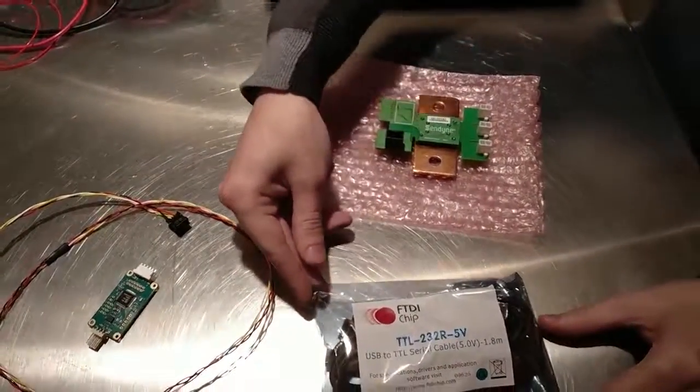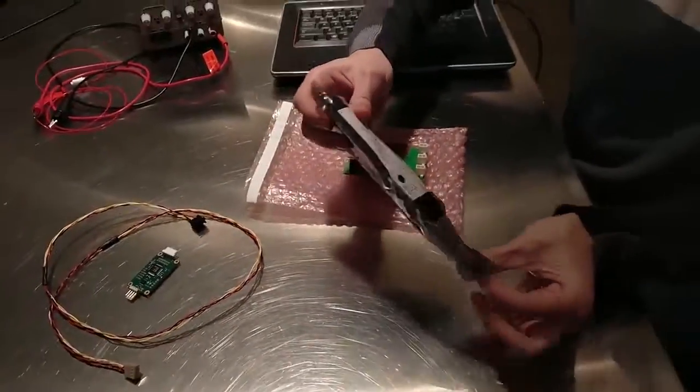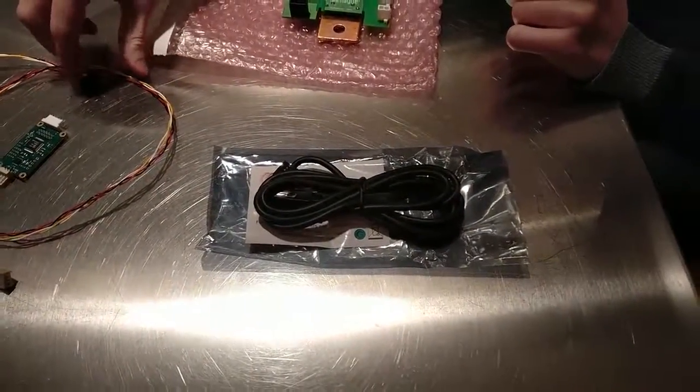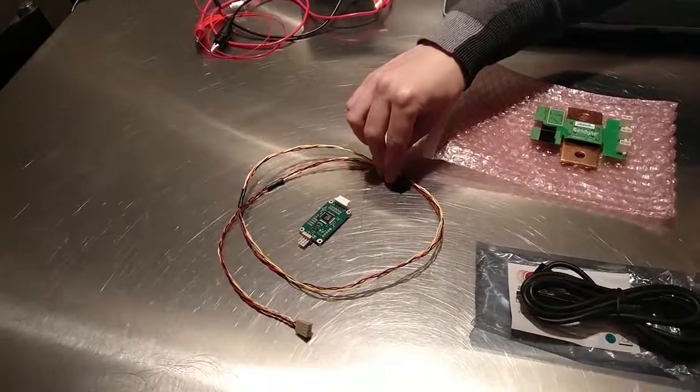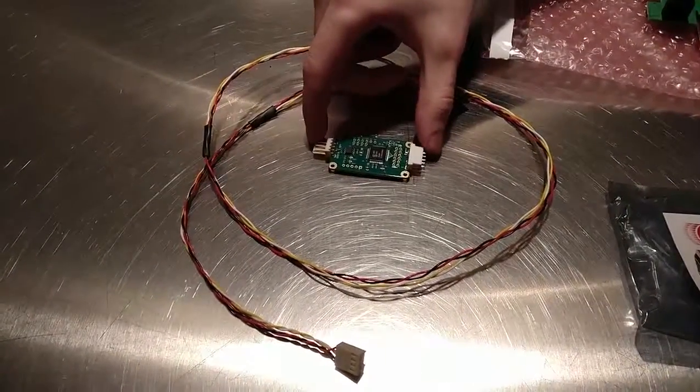Next, we have the FTDI cable which should arrive in its original packaging. You should also receive the cable that goes from the SFP to the SCD and the SCD itself.